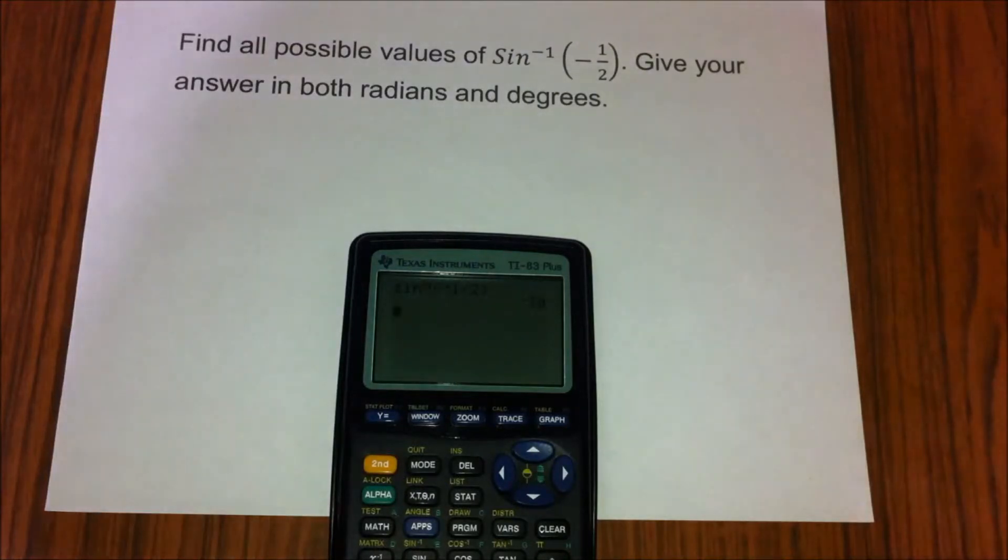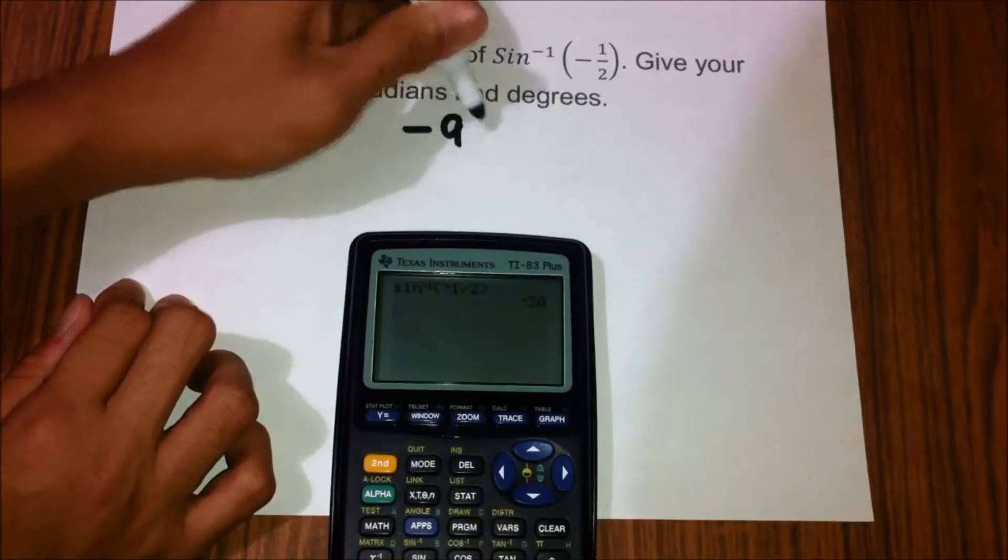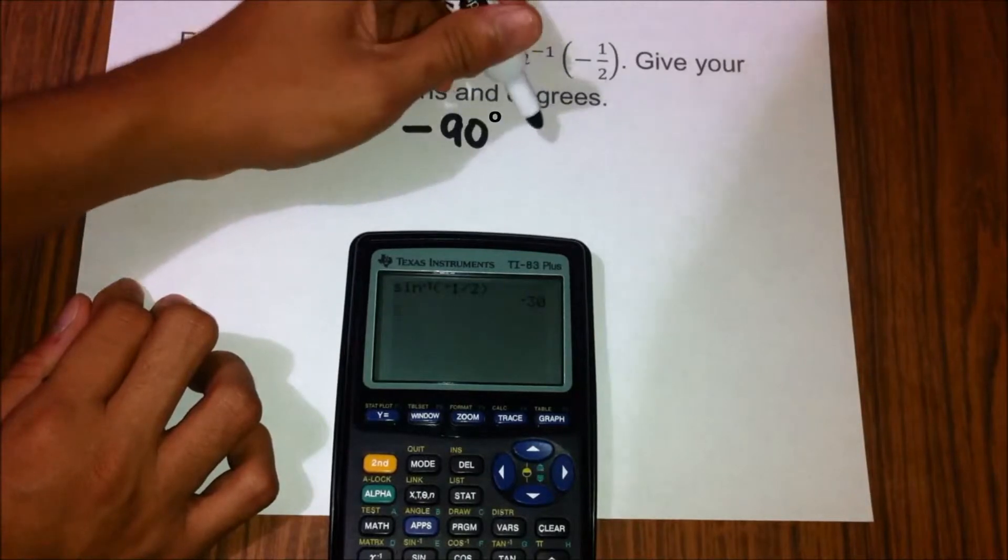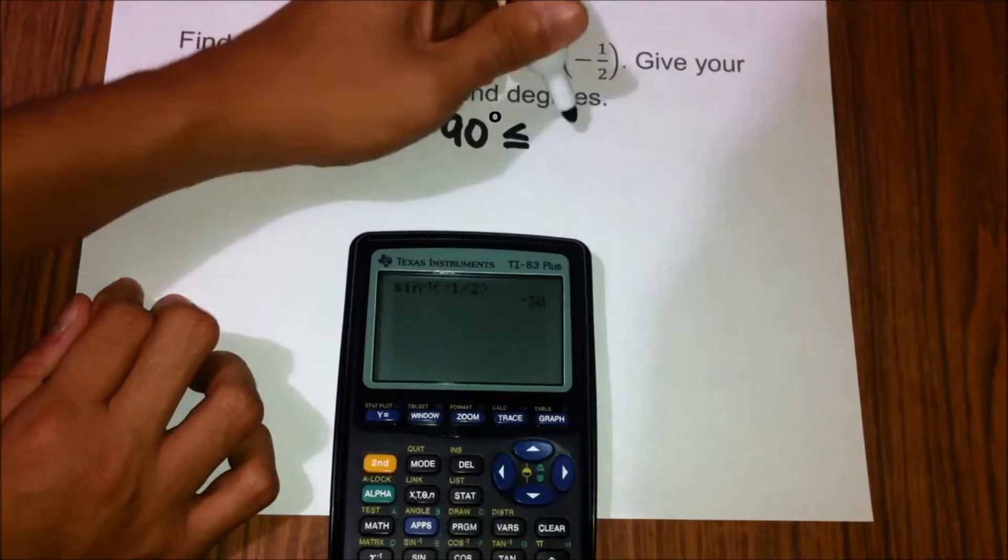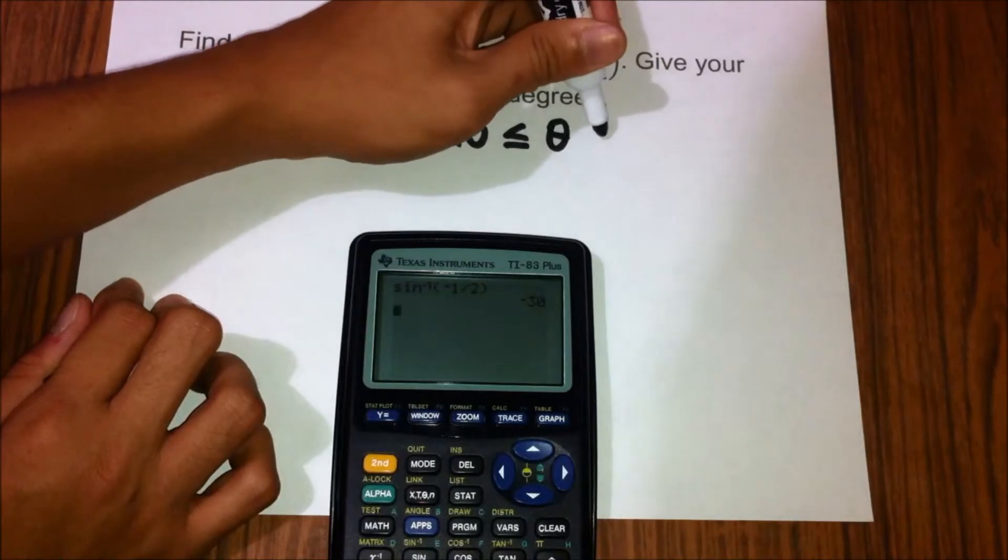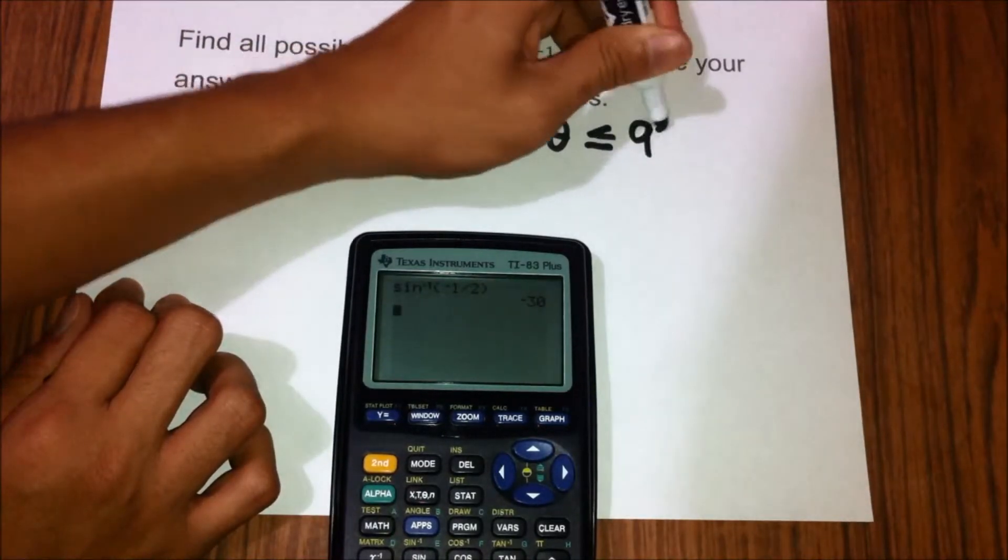The domain for inverse sine is negative 90 degrees is less than or equal to the value of theta is less than or equal to 90 degrees.